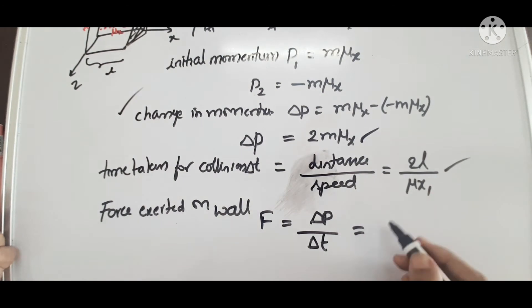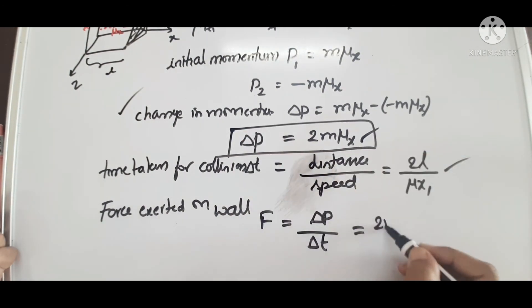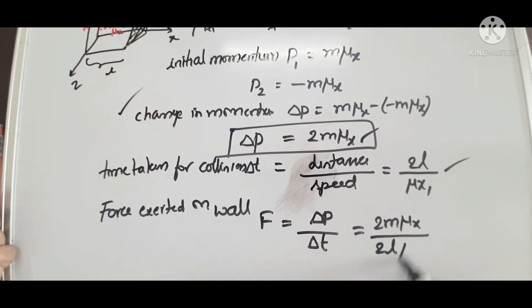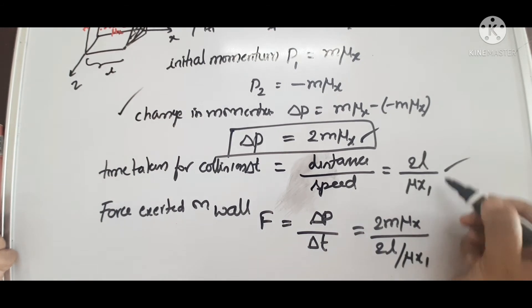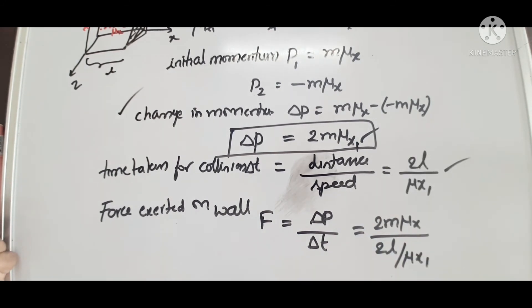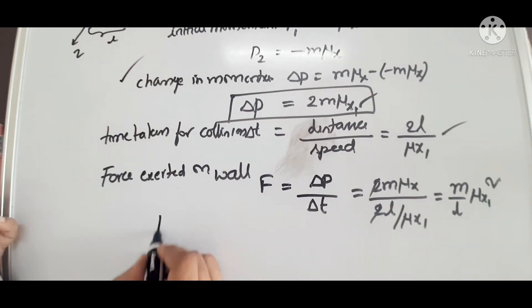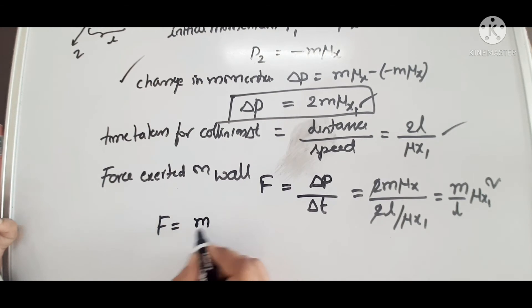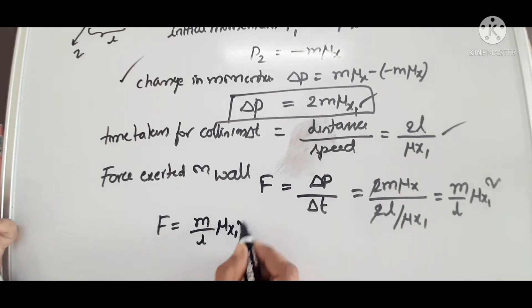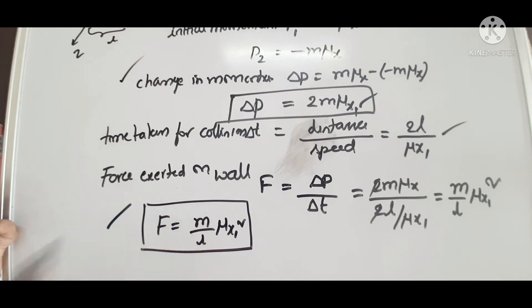Delta P is 2M mu x, divided by 2L divided by mu x1. The 2s cancel, giving M by L times mu x1 squared. So force equals M by L times mu x1 squared. This is the force applied by one molecule on the wall.